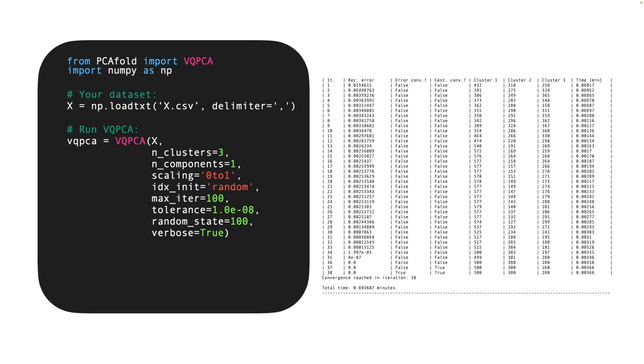As the VQPCA algorithm is running, you will see some information printed in real time with the verbose flag set to true. For instance, these columns tell you how many data points currently reside in each of the three clusters. These two columns tell you the status of the two convergence criteria. The first one is convergence of the data reconstruction error with local PCA, and the second one is the convergence of cluster centroids. That is, the algorithm checks whether from iteration to iteration the centroids have moved much or maybe not at all.